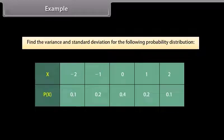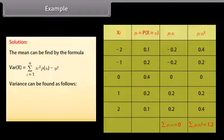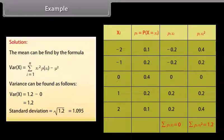Example: Find the variance and standard deviation for a given probability distribution. Solution: Using the formula Variance(X) = Σ xi²·p(xi) − μ², the variance equals 1.2. Therefore, standard deviation = √1.2 = 1.095.